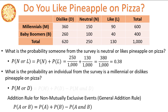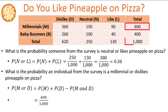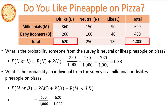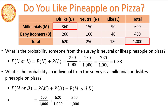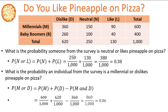This translates to the probability of M plus the probability of D minus the probability of M and D, when applied to our events. The probability of M is 600 out of 1,000, the probability of D is 620 out of 1,000, and the probability of M and D is 360 out of 1,000. This gives us 860 out of 1,000, or a 0.86 probability that an individual surveyed is a Millennial or dislikes pineapple on pizza.